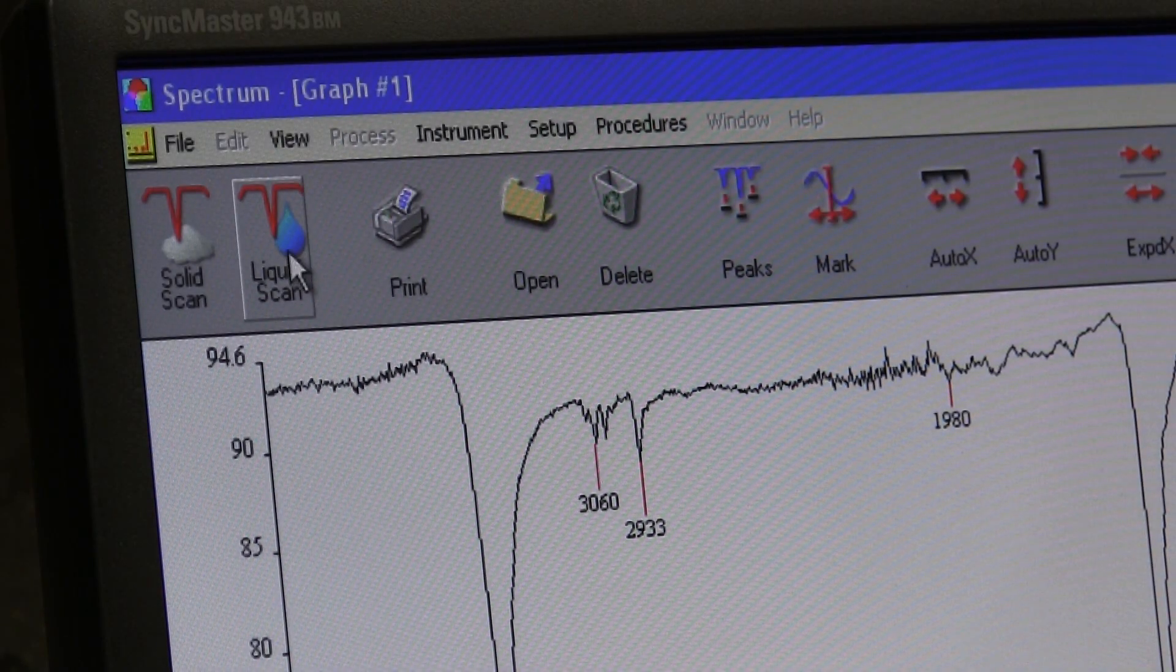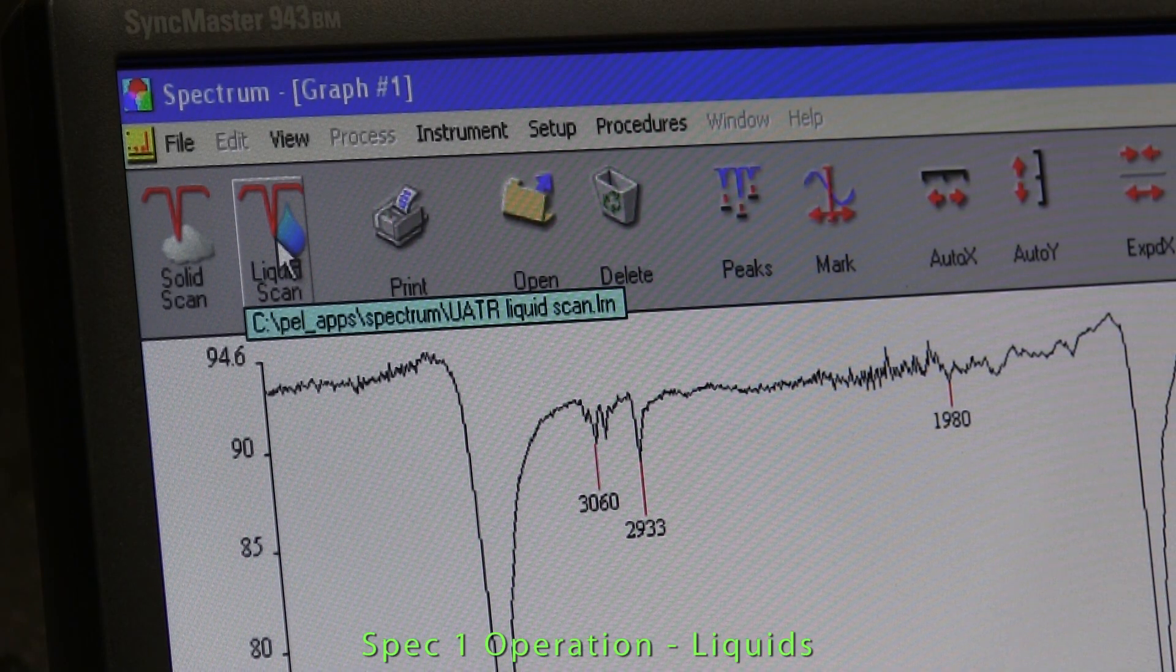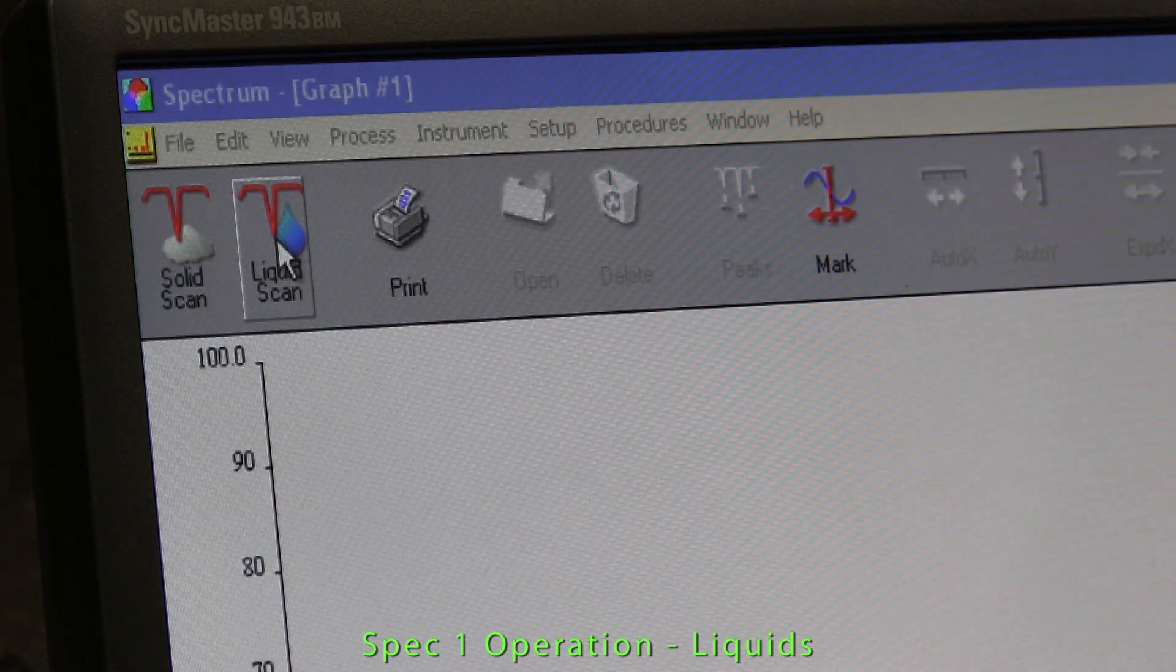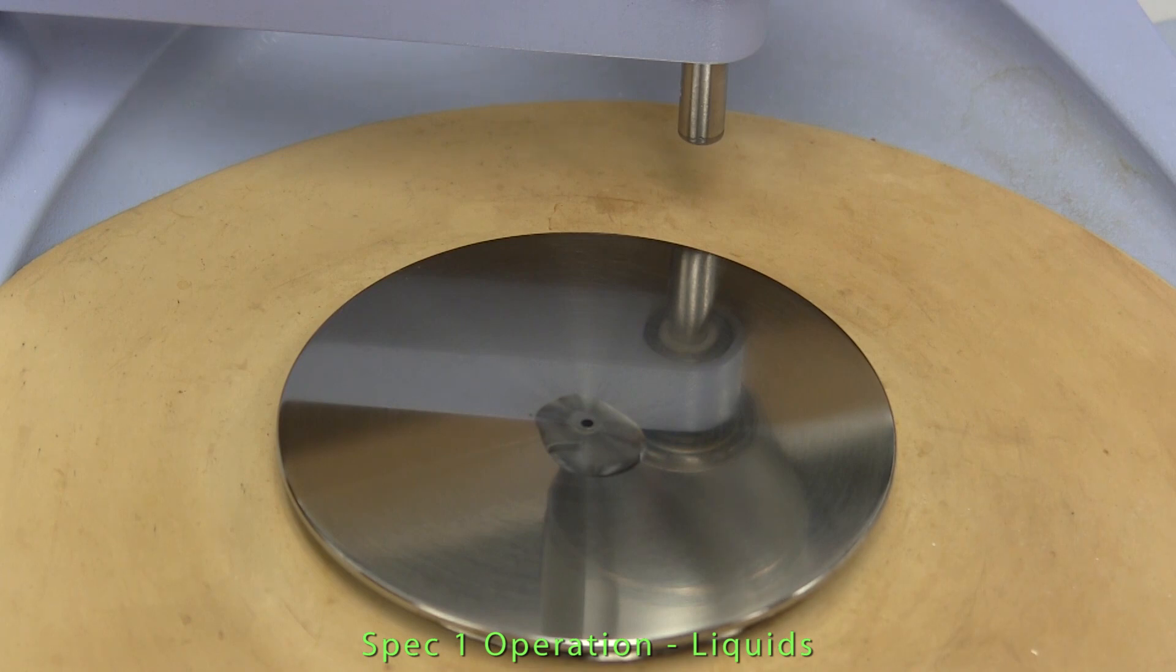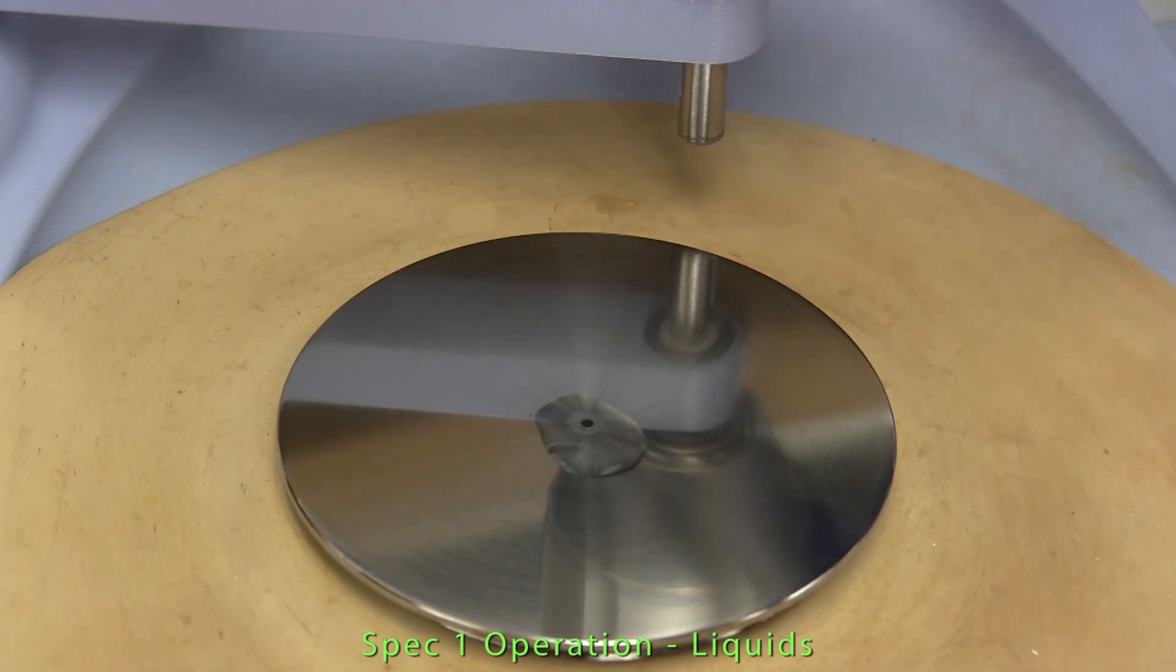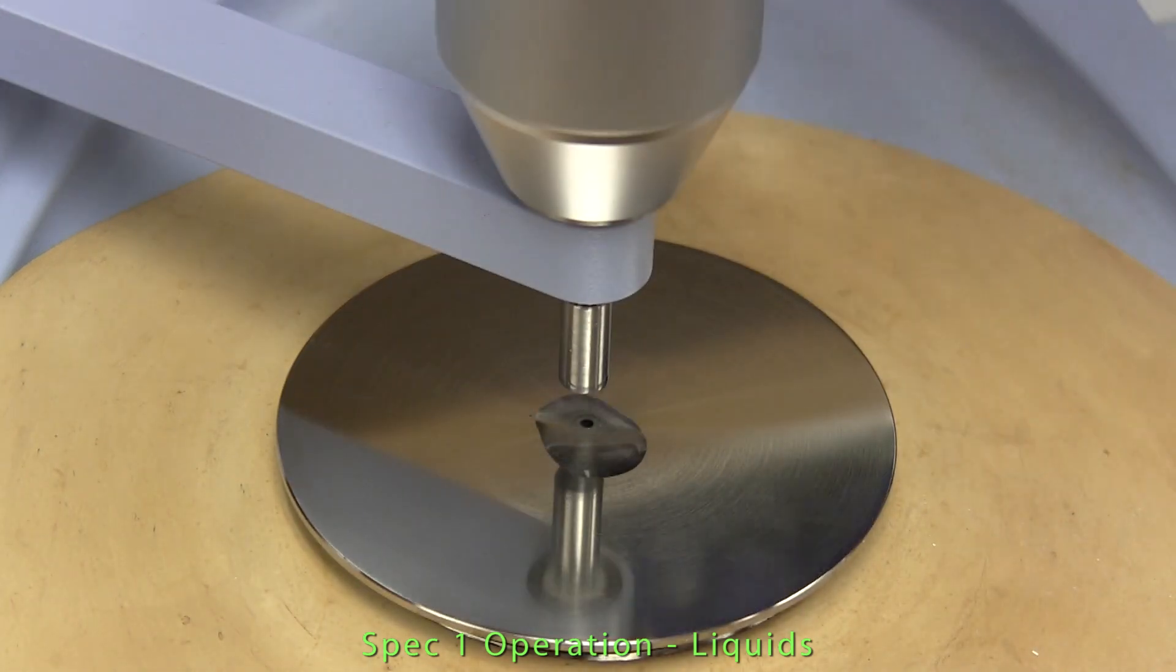Scanning a liquid sample with the ATR is very much the same as a solid. First press the liquid scan icon. A few drops of liquid are then placed over the ATR crystal and the pressure arm is rotated so that it just touches the sample.